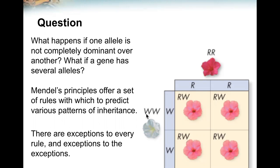This flower is white — white alleles — and red — red alleles. And when they are mixed, they're pink: red-white, red-white, so they're all pink.